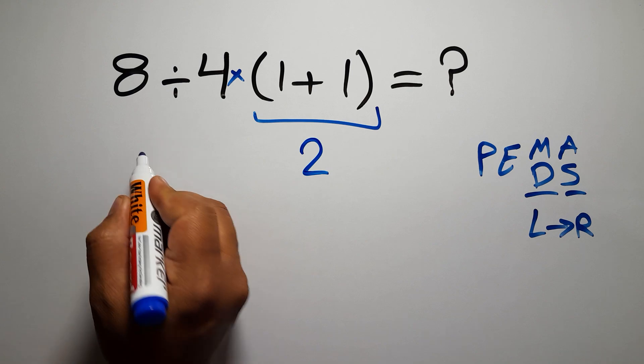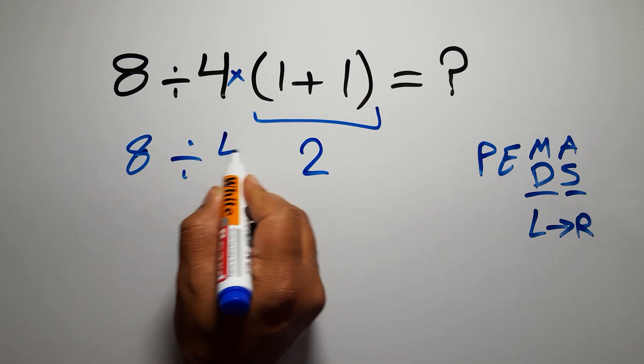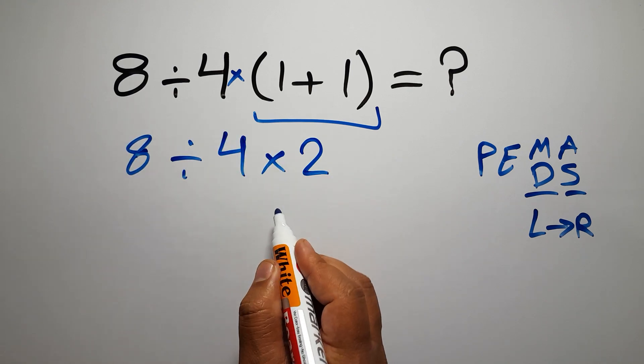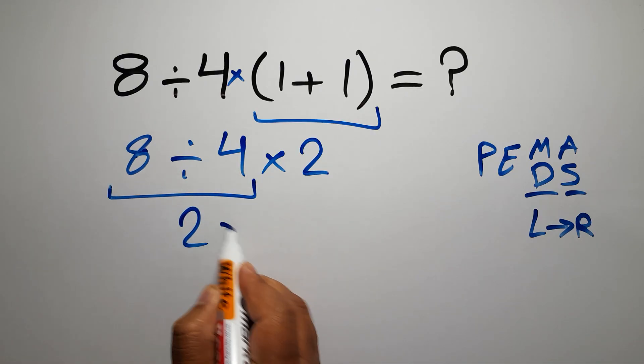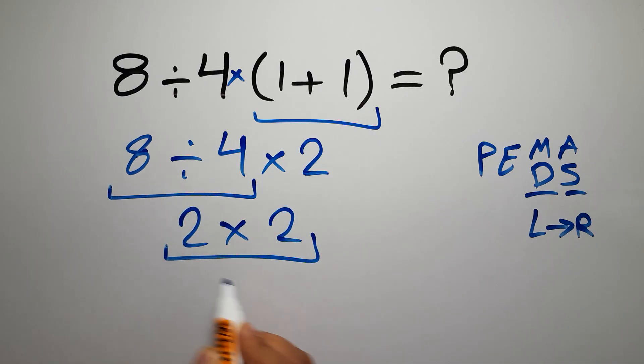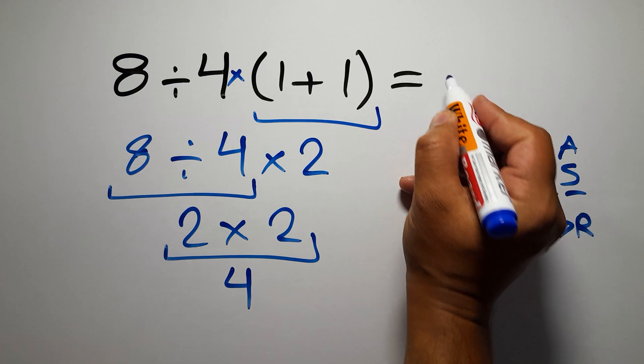1 plus 1 gives us 2. So 8 divided by 4 times 2. No, 8 divided by 4 gives us 2, and 2 times 2 is just 4. This is our final answer to this problem. The correct answer is 4.